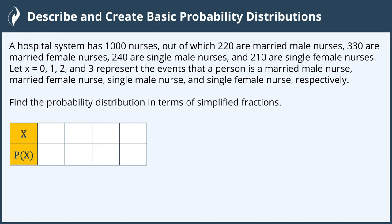A hospital system has 1,000 nurses, out of which 220 are married male nurses, 330 are married female nurses, 240 are single male nurses, and 210 are single female nurses.